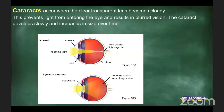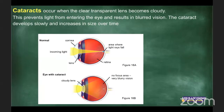Cataracts occur when the clear, transparent lens becomes cloudy, preventing light from entering the eye and resulting in blurred vision. Cataracts appear slowly over time and increase in size. They can be removed very easily with surgery — it's an immediate improvement in sight. You cannot wear glasses to treat cataracts; surgery is required.